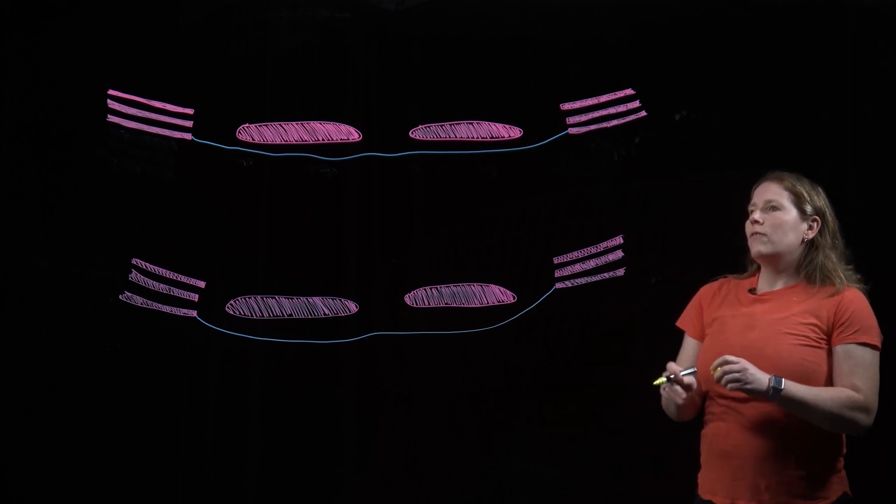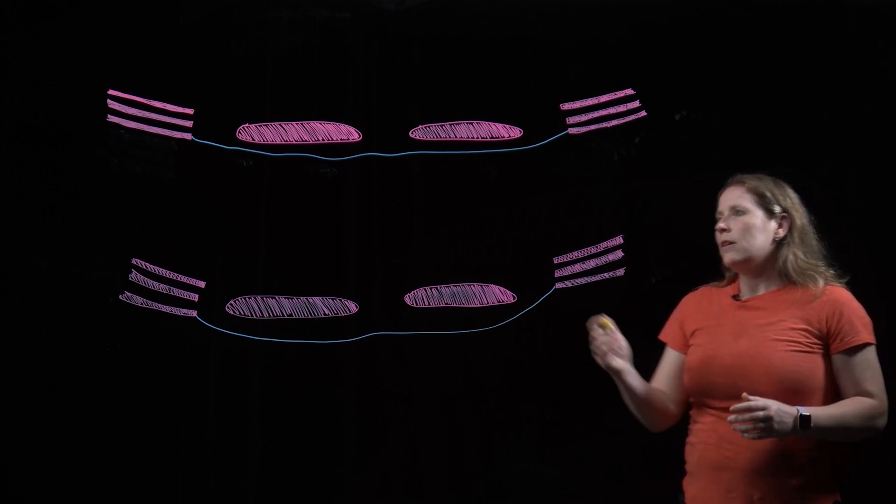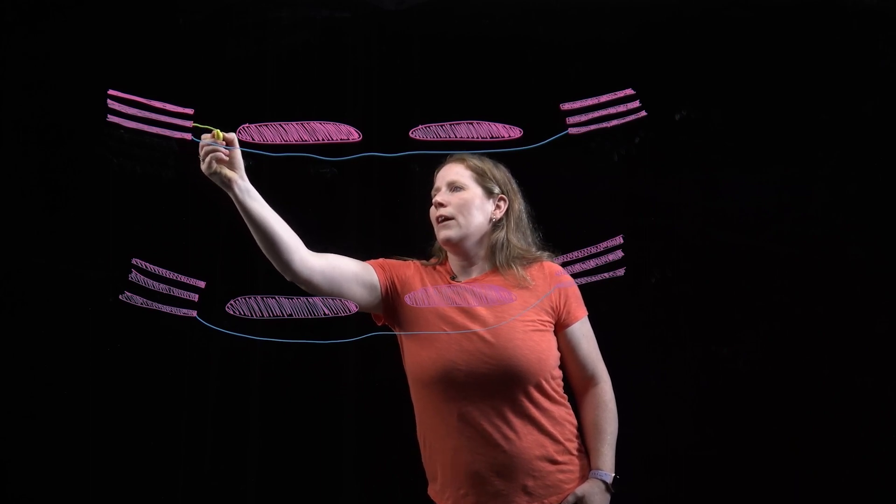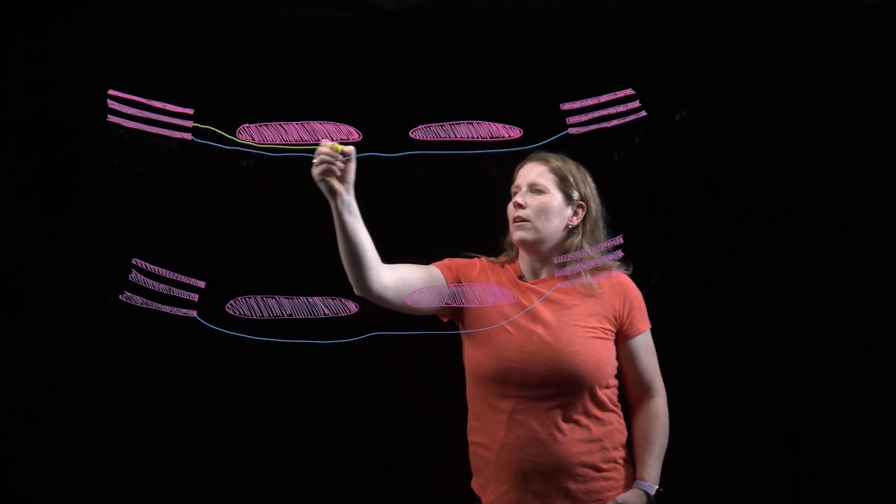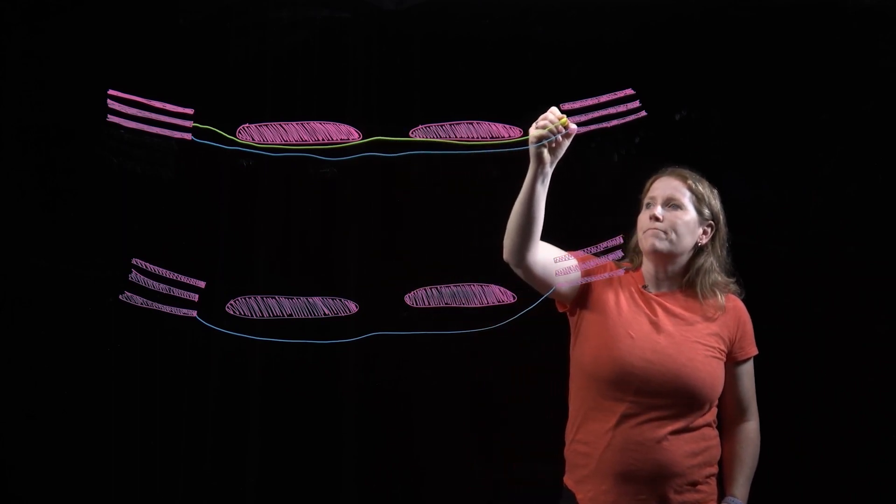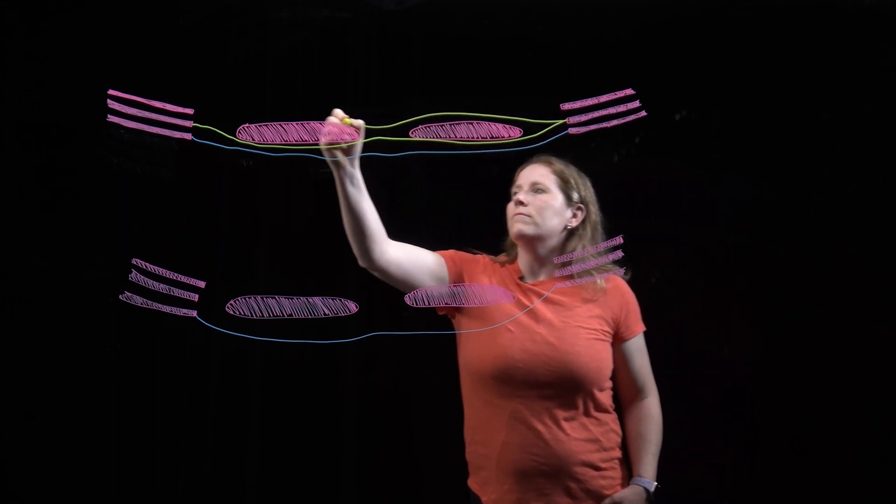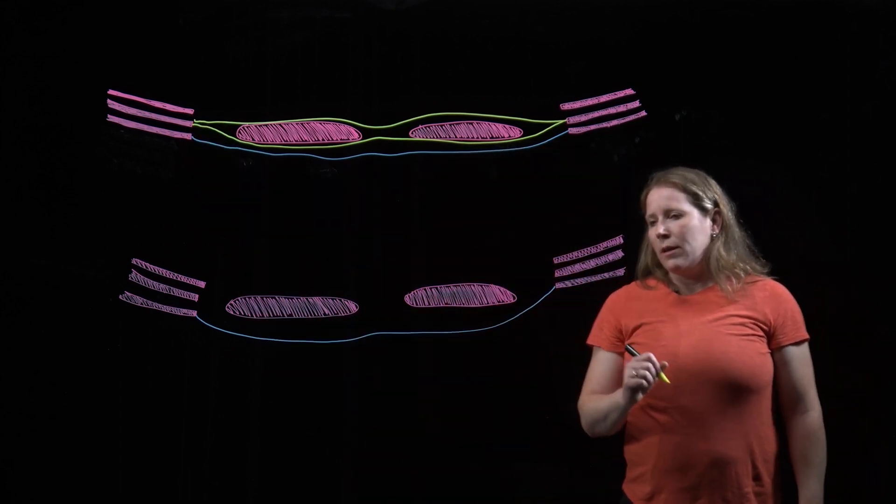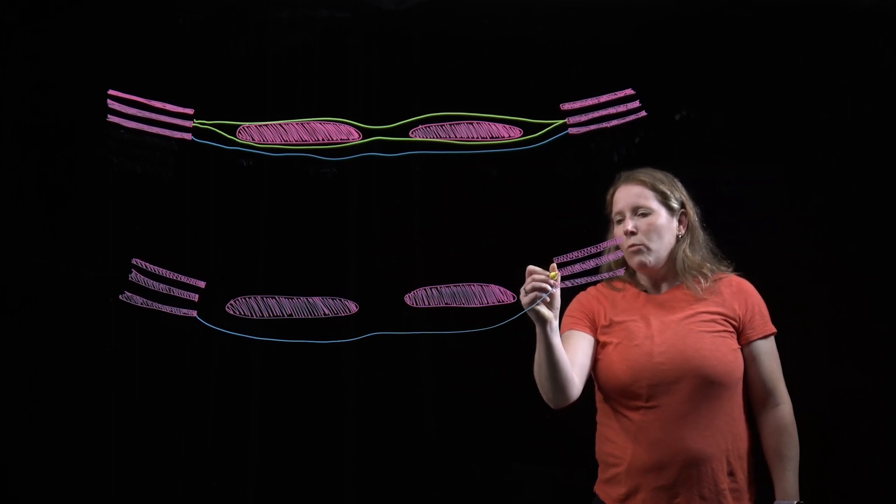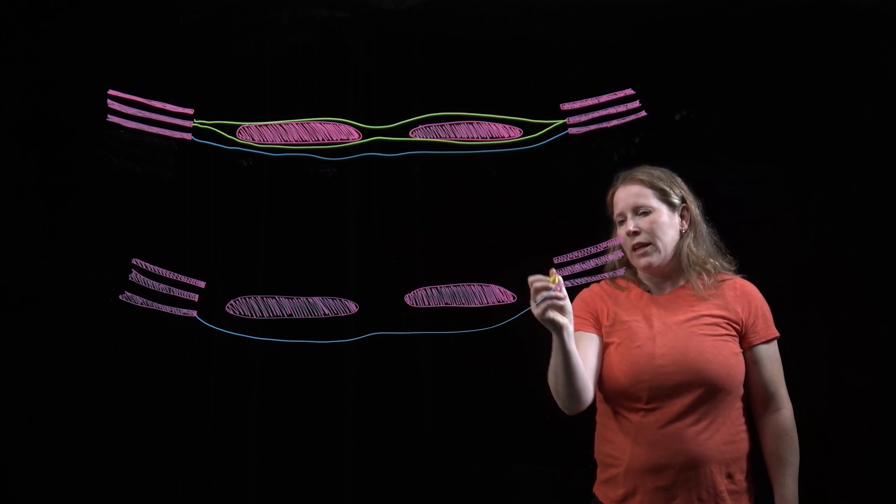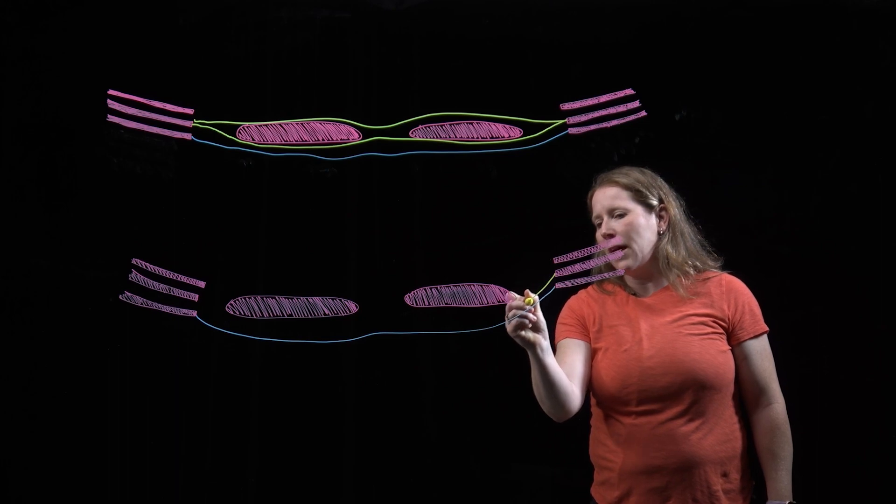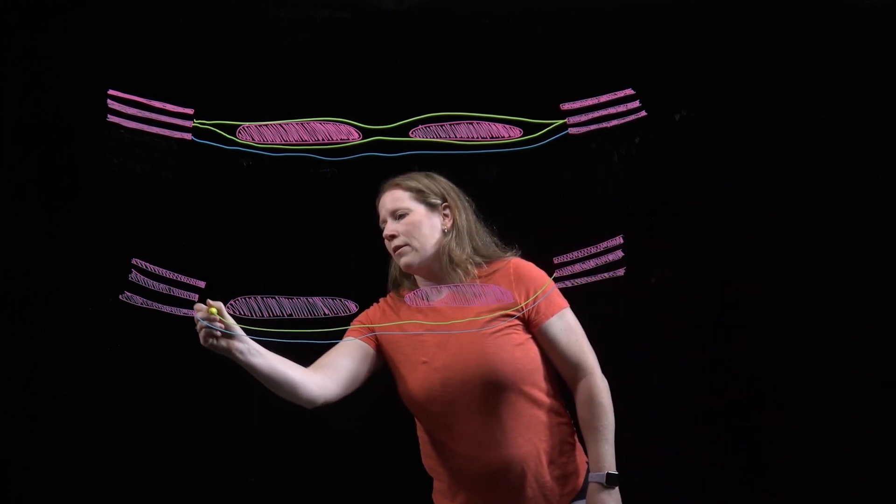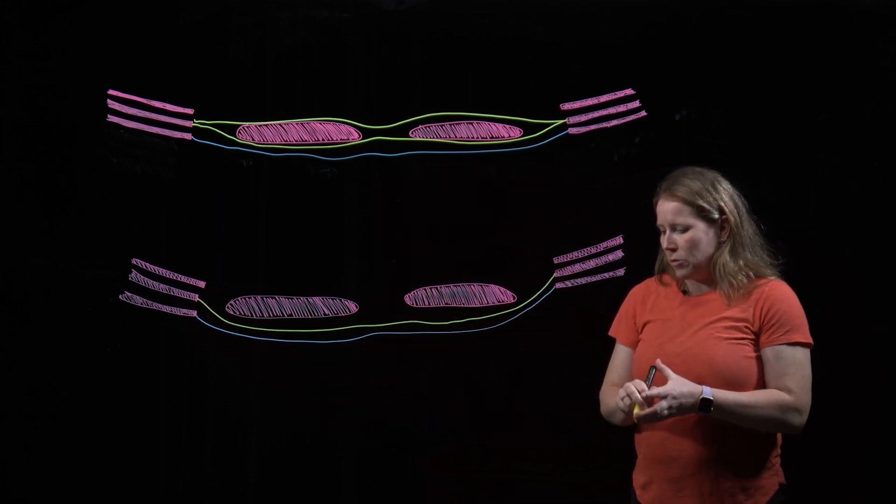The aponeurosis of the internal oblique, when we are higher than the umbilicus, it actually splits itself and wraps around either side of the rectus abdominis. When we are below the umbilicus, we no longer see that wrapping of the internal oblique aponeurosis. Instead, like external oblique, the two layers just both wrap anterior to rectus abdominis.